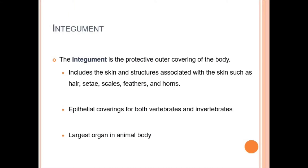The integument is a protective outer covering of the body that includes the skin and structures associated with the skin such as scales, claws, setae, horns, and feathers. It is the epithelial covering for both vertebrates and invertebrates, and is known as the largest organ in the animal body.